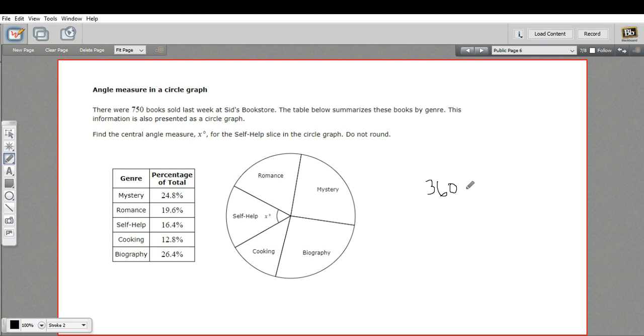With percents, when we multiply, we move the decimal two places to the left. So we're going to multiply 360 by .164. And that is going to give us the angle degree that we need. 360 times .164. Just using my calculator here.